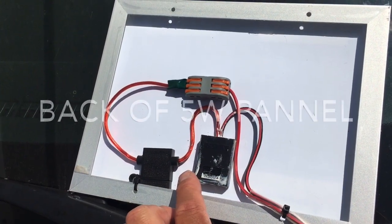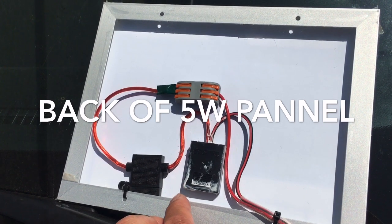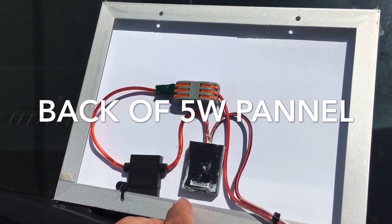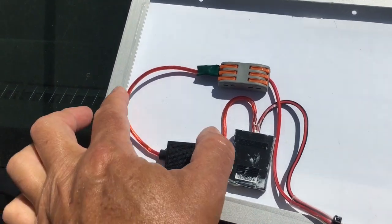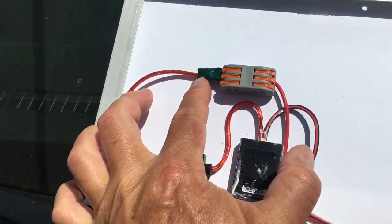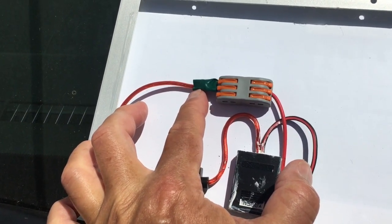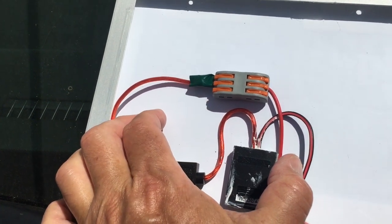This is a standard 5 watt solar panel that you can buy on Amazon or AliExpress. I put in a fuse and then I have a diode here that keeps this from draining the battery when the sun goes down.